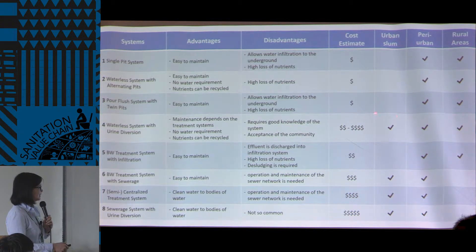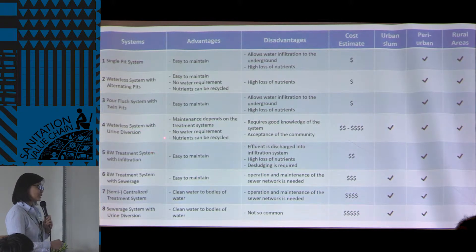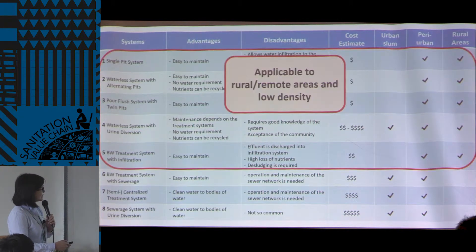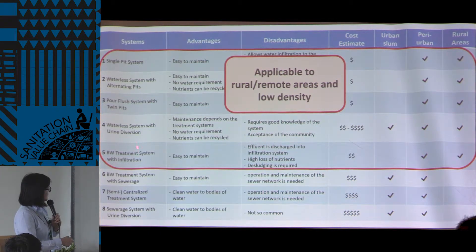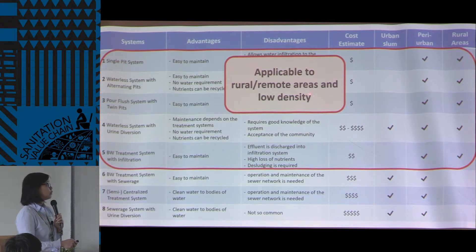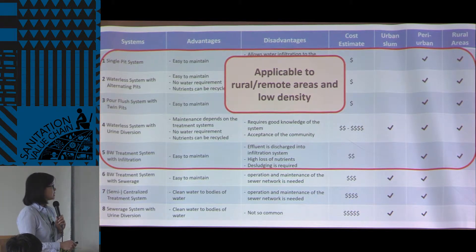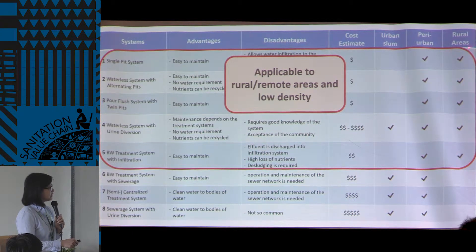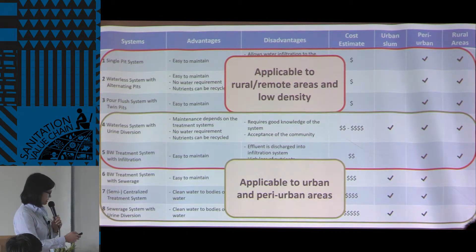There are different types of technologies you could use to manage the waste. The first five systems can be applicable to rural or remote areas and low-density populations — that's why I put a check for rural and peri-urban areas.